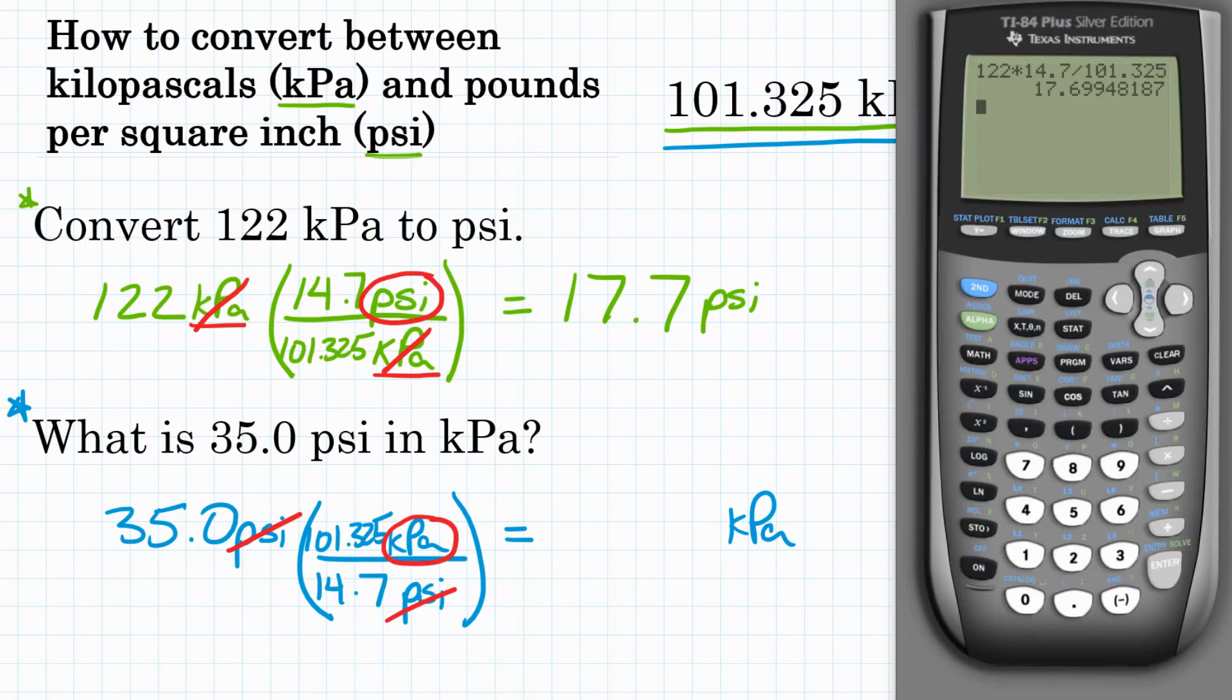So now we can plug this in our calculator. We are going to start with 35.0, multiply by the top, divide by the bottom. So we're going to multiply by 101.325, divide by 14.7. Hit equals, and we get 241.25. Let's round that to 241.